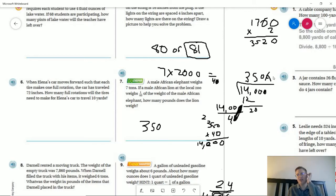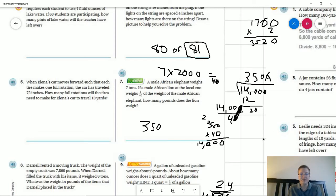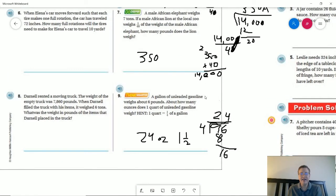Number nine, a gallon of gasoline weighs about six pounds. How many ounces is one quart? So we are taking a smaller amount so we are going to take our weight and multiply it by 16 ounces and that would give us 96 ounces. Divide by four because we are taking one-fourth of a gallon and that would give us 24 ounces.